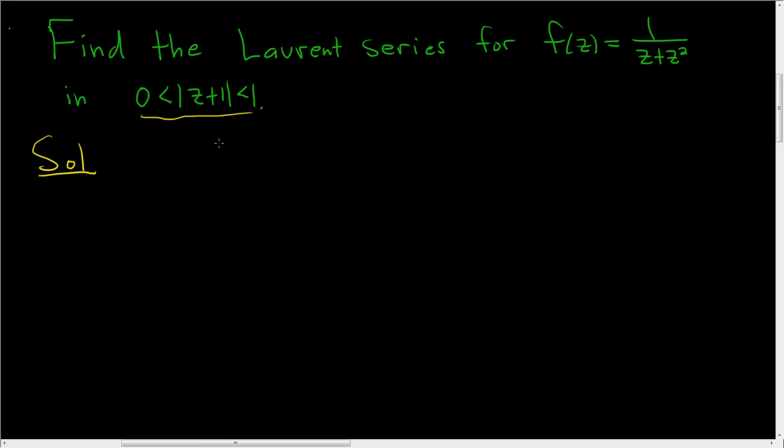So there's a formula that we'll need. It basically says if you have 1 over 1 minus w, that's equal to the infinite sum as n runs from 0 to infinity of w to the n. And this is true as long as the modulus of w is less than 1.